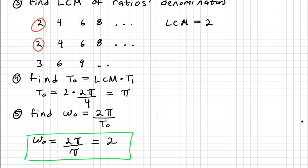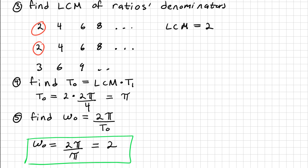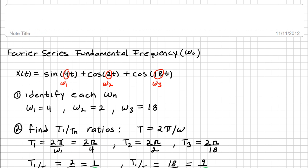And perhaps none of these numbers would have matched. But in the end, the result would have been the same. So those are the 5 steps to finding the fundamental frequency to help you solve Fourier series problems. Thank you for watching.